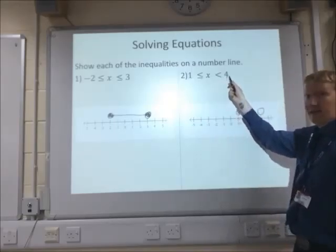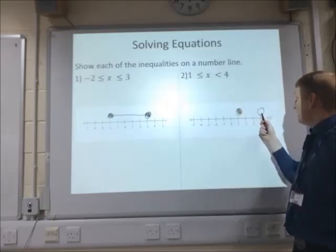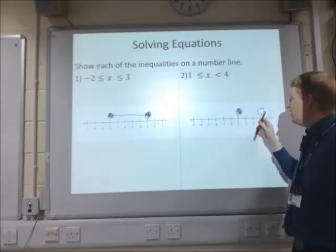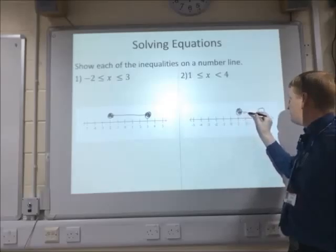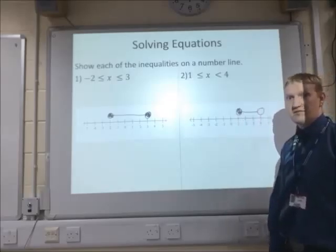But because x can't equal 4 here, we're going to leave it blank in the middle. And then again, because x is in between the two numbers, we just join up the two circles.